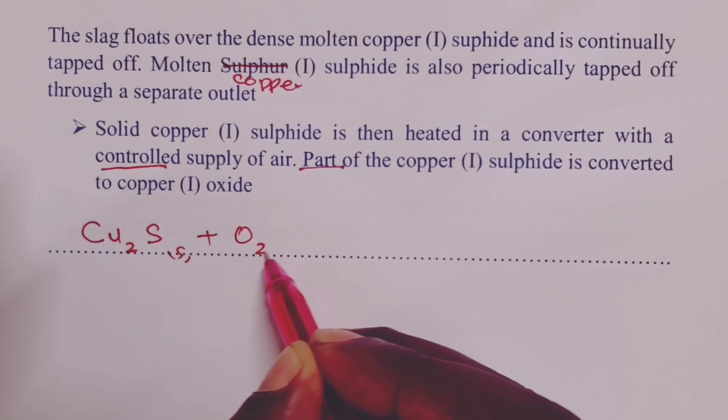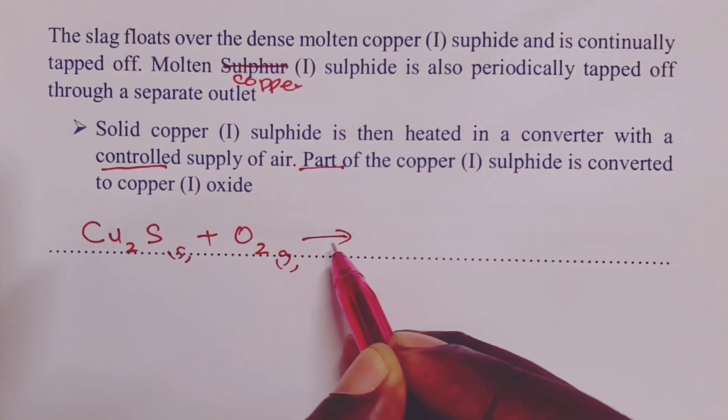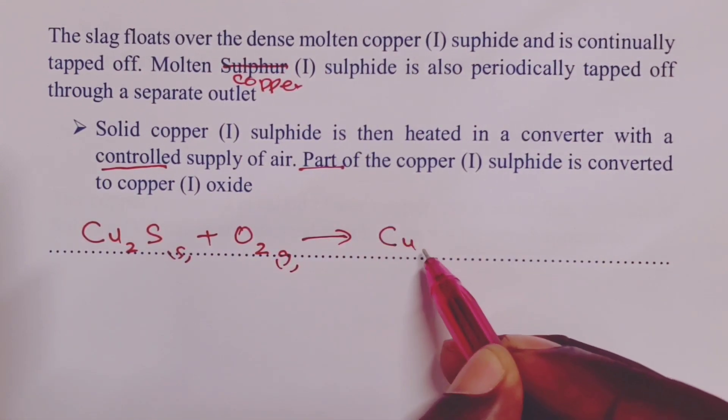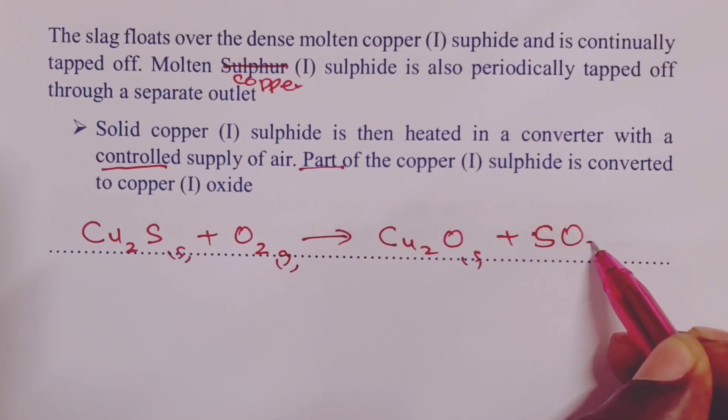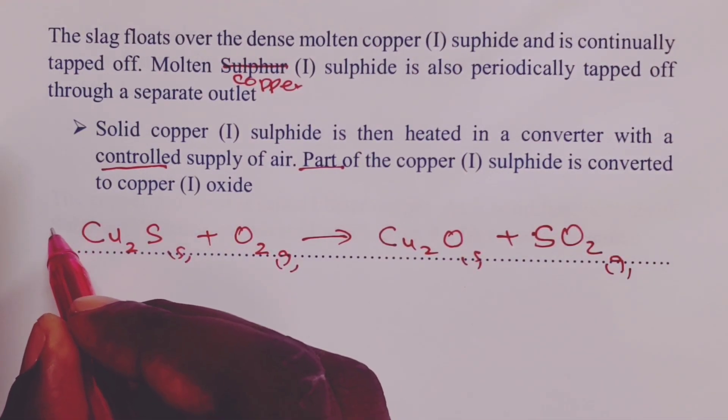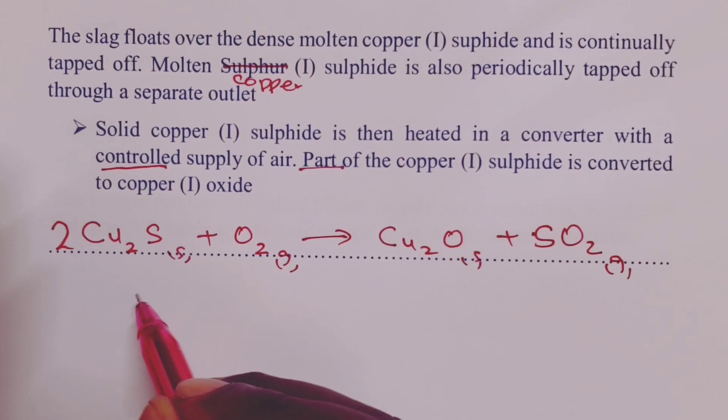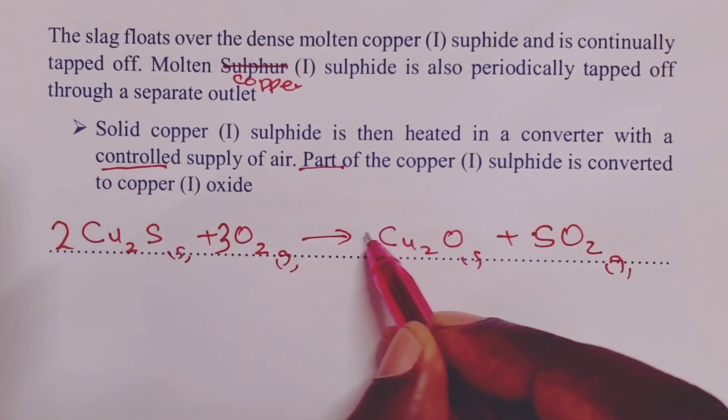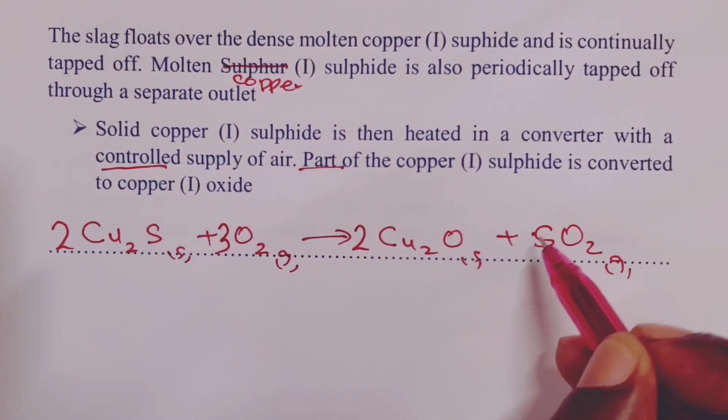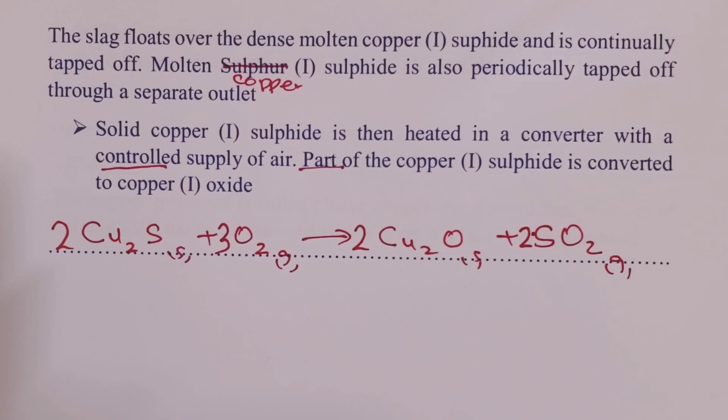During this controlled supply of air to our copper-1-sulfide, part of it is going to react with oxygen in air and we form copper-1-oxide together with a little bit more of sulfur-4-oxide. This equation is balanced with a 2 on copper-1-sulfide, a 3 on oxygen, a 2 on copper-1-oxide, and a 2 on sulfur-4-oxide.